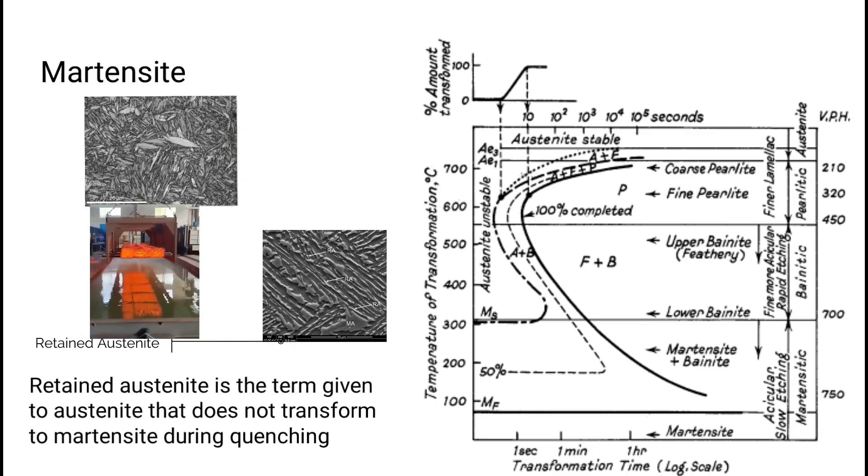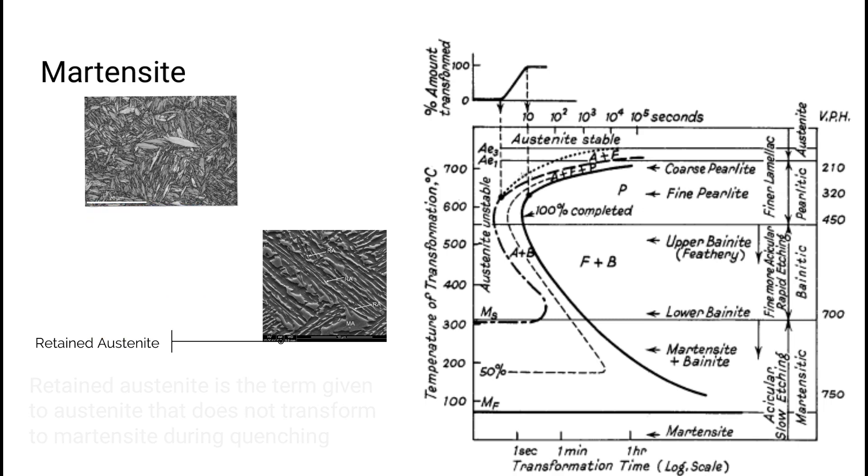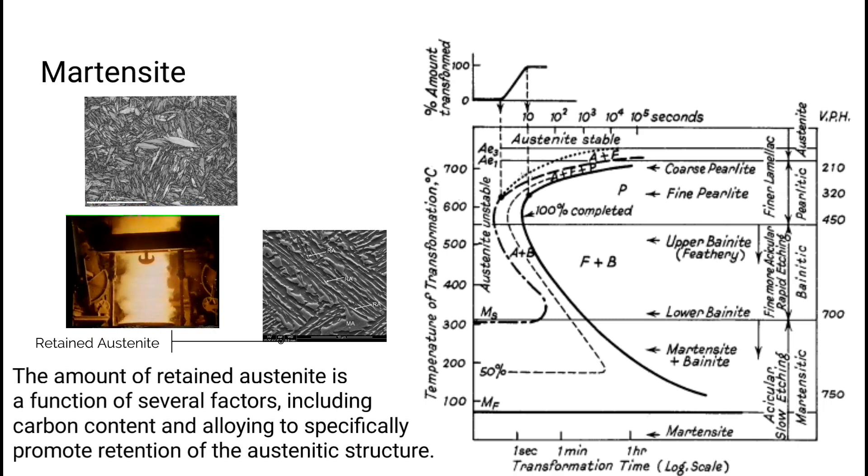Retained austenite is the term given to austenite that does not transform to martensite during quenching. The amount of retained austenite is a function of several factors, including carbon content and alloying to specifically promote retention of the austenitic structure.